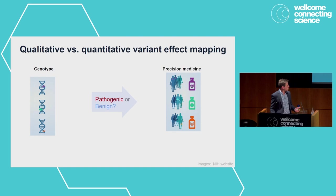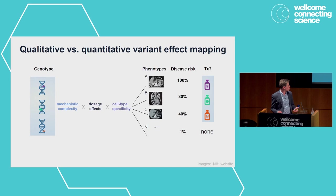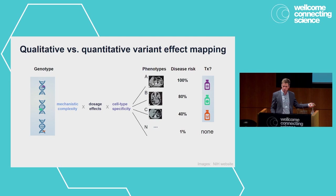The simplistic way of looking at this is we want to use an assay to say whether a variant is pathogenic or benign. But if we think about all the complexity underlying that equation, there's mechanistic complexity on the genetic level — different mechanisms by which variants impact function, dosage effects of variants, the degree to which function is impacted, and also cell type specificity across all the different cells and tissues in the body.